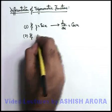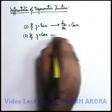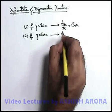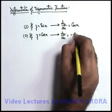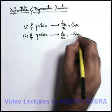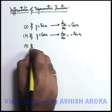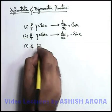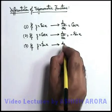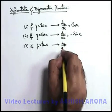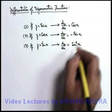Second, if you're given with y = cos x, then in this case dy/dx is given as minus sine x. If you're given with y = tan x, then dy/dx in this case is written as sec squared x.